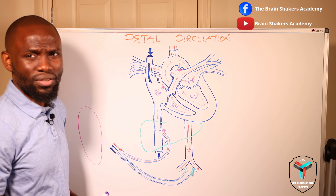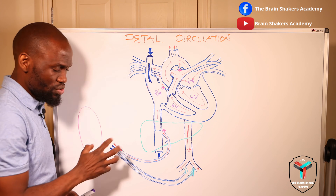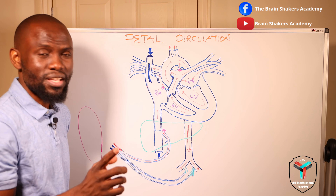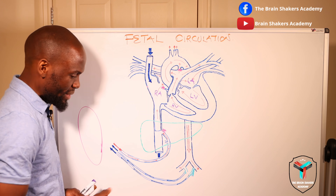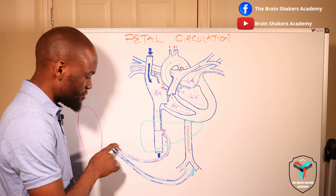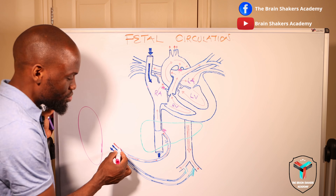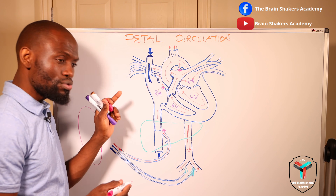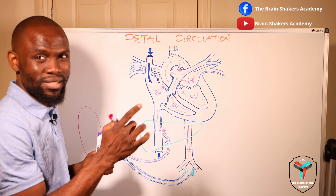The lungs in normal or adult circulation play a key role in making sure that oxygenation or the respiration process is facilitated. During fetal life, however, we have plenty of fluid in the lungs and the lungs are unable to function in that order, so the placenta takes its key role. From the placenta we have the umbilical vein, and back to the placenta we have the umbilical arteries. Oxygenated blood flows through the umbilical vein, and as it comes through, a portion passes through the liver via the hepatic sinusoids while another part bypasses the liver.